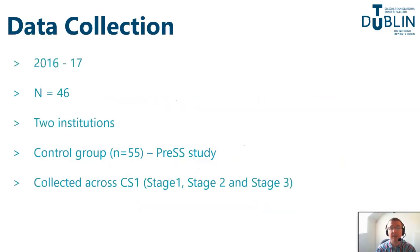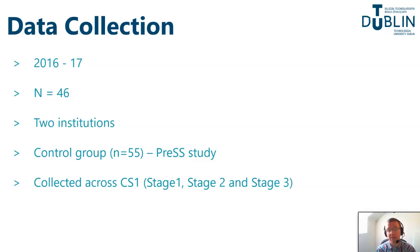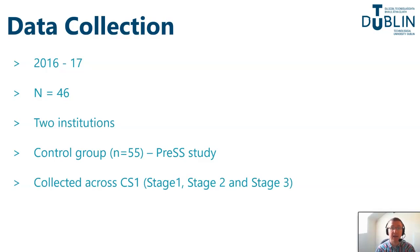Our data collection began in 2016-2017, which forms our intervention group with a sample size of 46 students, conducted over two institutions: a university and a community college. We also had access to the same two institutions from the previous year who took part in the PRESS study as a control group with a sample size of 55. Survey data was collected across three stages. Stage one was about four to six hours into the introductory programming course — this is when the data was collected for PRESS. We applied the intervention just after stage one, recording data for both the intervention and control group before the intervention was applied. Stage two is at the end of CS1 and stage three is at the end of the academic year.